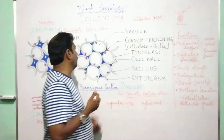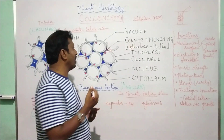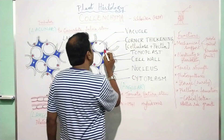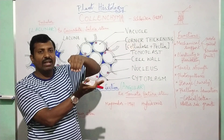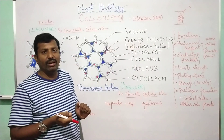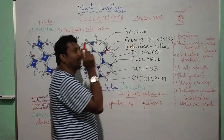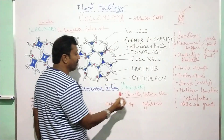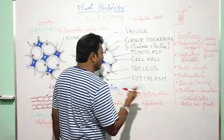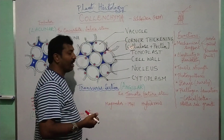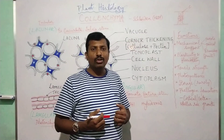So, we call that the pectocellulosic cell wall in Collenchyma. Since thickening is observed at the corners when the cylindrical cells are observed under sectional view in the microscope, it appears angular and is completely filled. That is why we call this type of Collenchyma as Angular Collenchyma. For example, in the stem of tomato, Datura, potato — very common in the family Solanaceae.